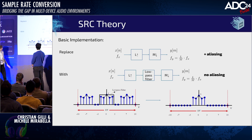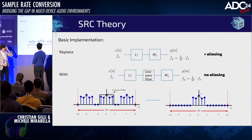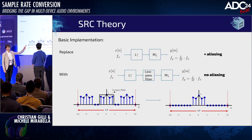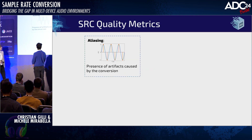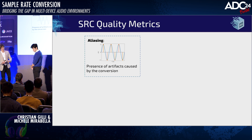Low-pass filtering should ideally limit the band of your original signal to the maximum expectable frequency. Ideally this should be a box-shaped filter, and of course this filter needs to be properly designed and introduces a non-negligible amount of complexity in the system. Now let's talk about quality metrics, because SRC is very simple but when we introduce filtering it becomes a matter of trade-offs.